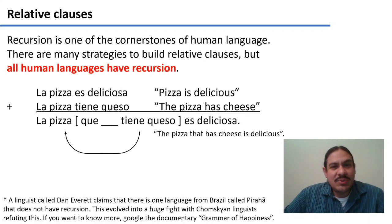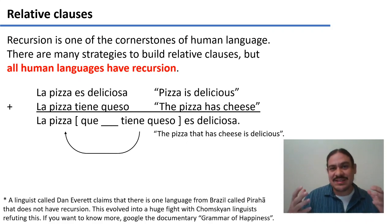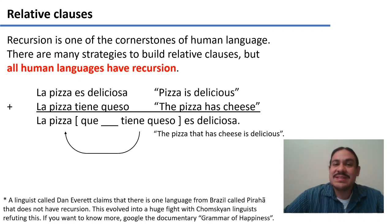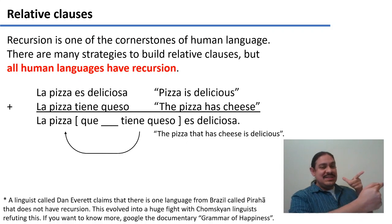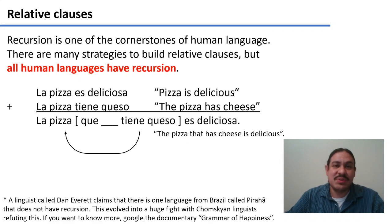Recursion is one of the cornerstones of human language, and there are many strategies to build relative clauses. Turkish builds them differently; some indigenous languages of the Americas, like BriBri, build them differently. But in general, all human languages have these kinds of structures and recursion. In Spanish, combining 'la pizza es deliciosa' and 'la pizza tiene queso' gives 'la pizza que tiene queso es deliciosa' — the pizza that has cheese is delicious. You can find relative clauses in pretty much every human language.